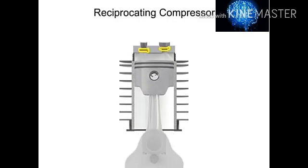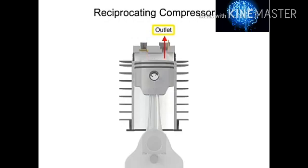There are two valves at the head of the cylinder: an inlet and an outlet. The inlet, sometimes called the suction valve, allows atmospheric air to enter the cylinder. The outlet, sometimes called the discharge valve, ejects the newly compressed air from the cylinder.